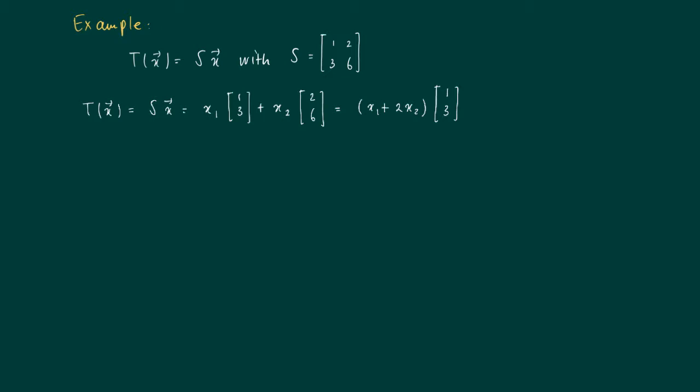So by varying X1 and X2, we see that the image of S equals all linear combinations of one vector [1, 3].